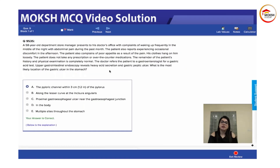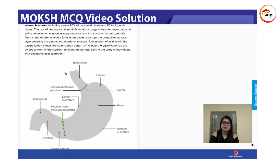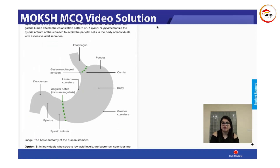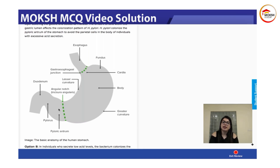There are two most common locations for a gastric ulcer that you need to know about. This is the normal anatomy of the stomach. This is the esophagus, the gastroesophageal junction, the fundus, and where the esophagus enters the stomach is called the cardia. Then you have the body, the greater curvature, the lesser curvature, the angular notch — called the incisura angularis — and the pylorus. Then the duodenum.